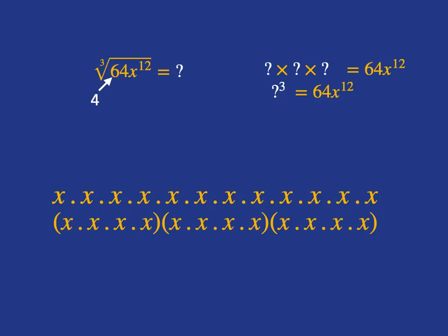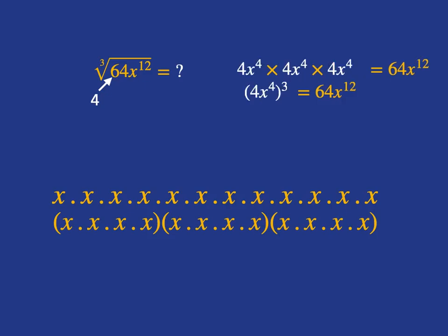In other words, x to the power of 4. And if we take x to the power of 4 times x to the power of 4 times x to the power of 4, we're going to get x to the power of 12. So what we have is that 4x to the 4 times 4x to the 4 times 4x to the 4 is 64x to the 12.